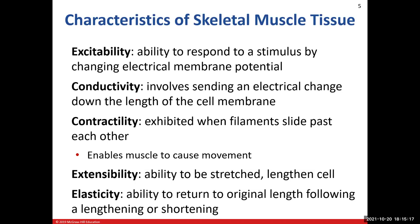Similar to how a neuron conducts a signal down the axon, we need to conduct an action potential down the plasma membrane of skeletal muscle to cause a contraction — that's conductivity. Contractility is when we achieve the goal of getting the muscle to contract. Once threshold is reached, we initiate a muscle contraction involving contractile filaments — thin and thick protein filaments that slide past each other, creating the contraction which elicits muscle movement.